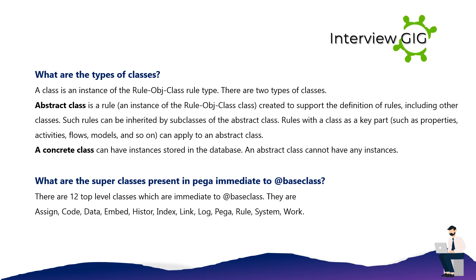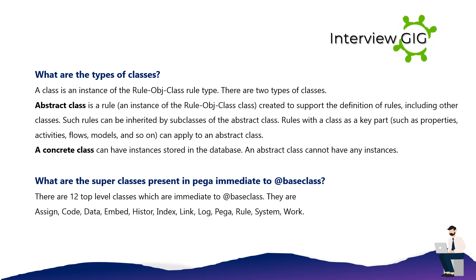What are the types of classes? A class is an instance of the rule-obj class rule type. There are two types of classes. An abstract class is an instance of the rule-obj class, created to support the definition of rules including other classes. Such rules can be inherited by subclasses of the abstract class. Rules with a class as a key part, such as properties, activities, flows, models, and so on, can apply to an abstract class.